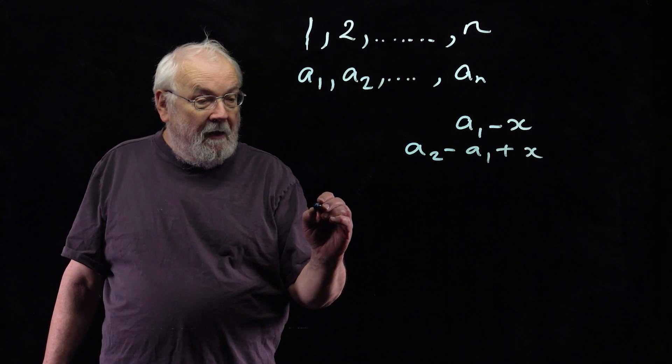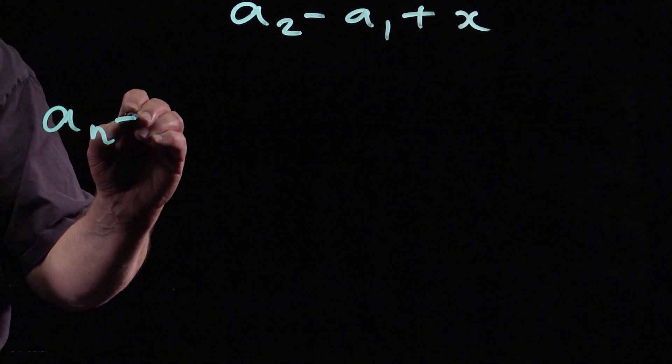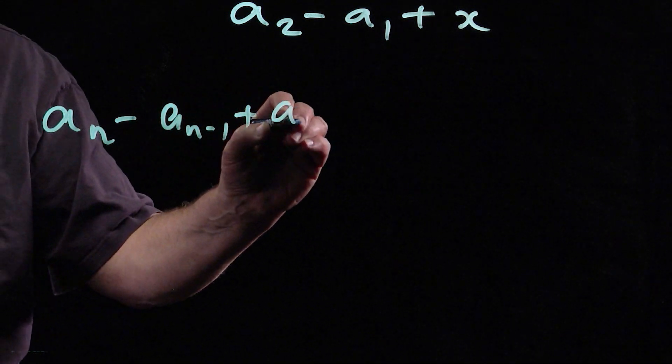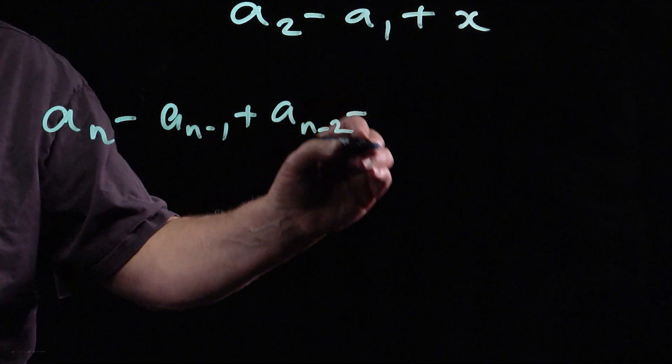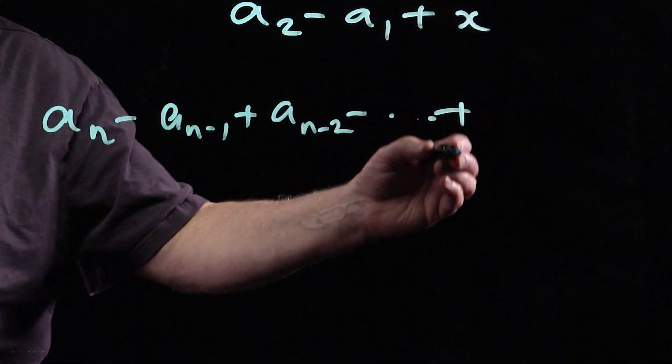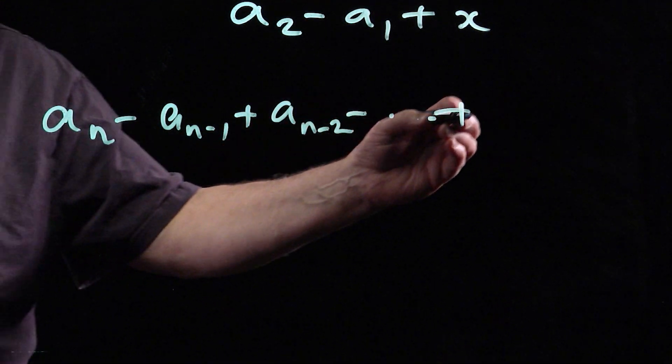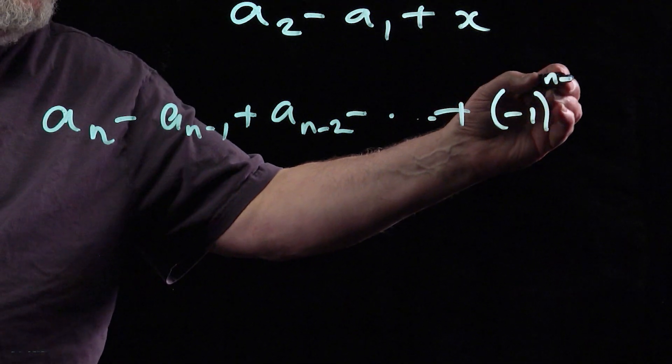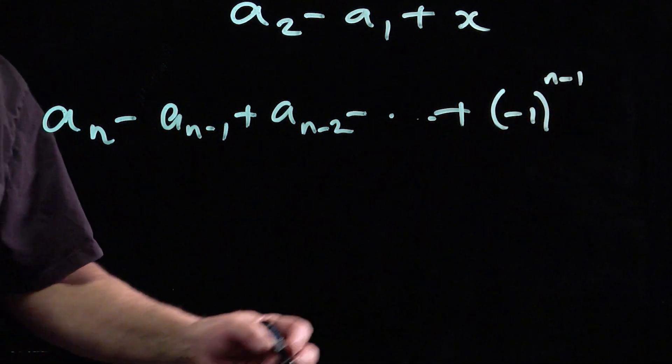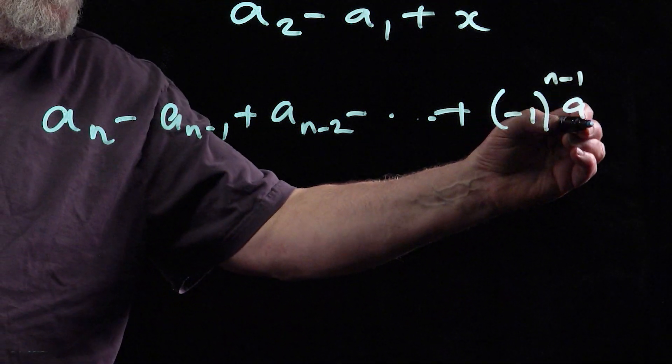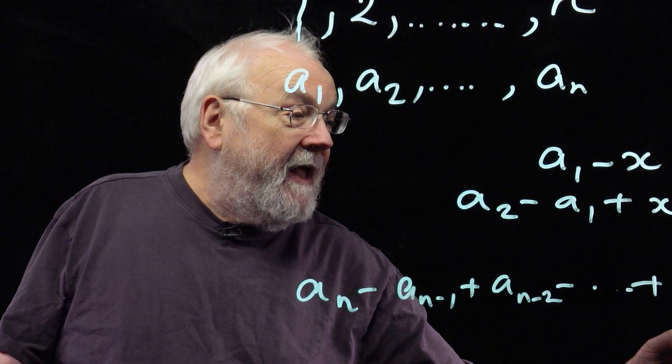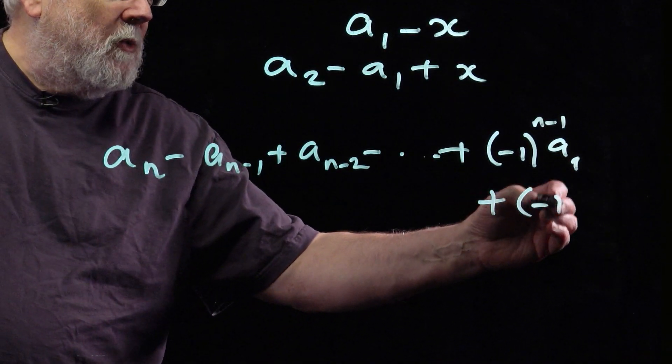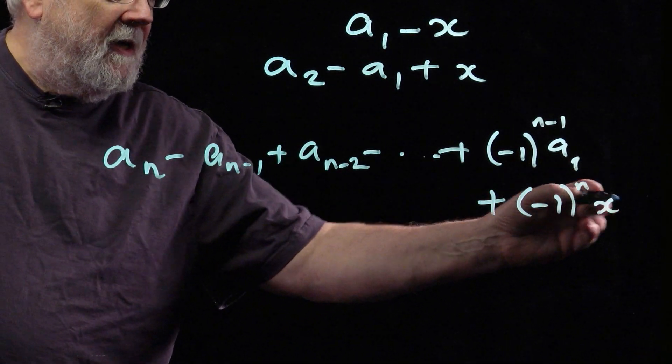And when n cards are done, at the end here you can't be sure. So the sign of a₁ is going to be (-1)^(n-1), and the sign of x is going to be (-1)^n times x.